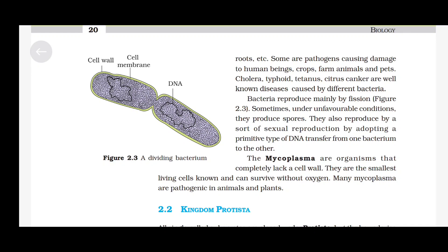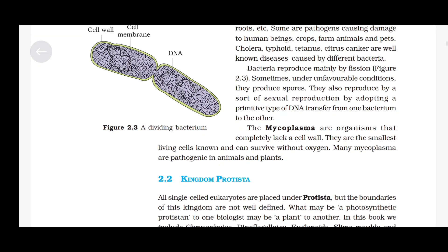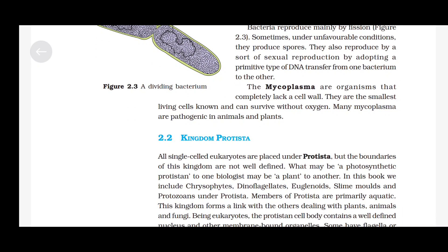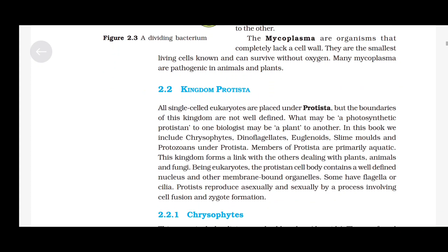The mycoplasma are organisms that completely lack a cell wall. They are the smallest living cells known and can survive without oxygen. Many mycoplasma are pathogenic in animals and plants.